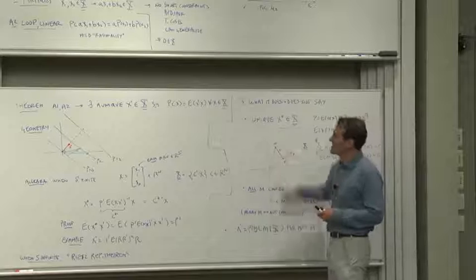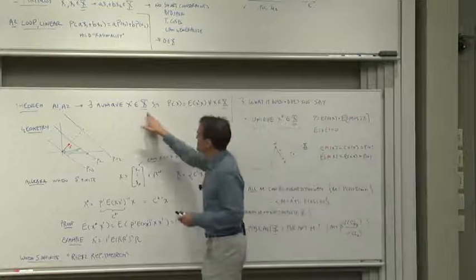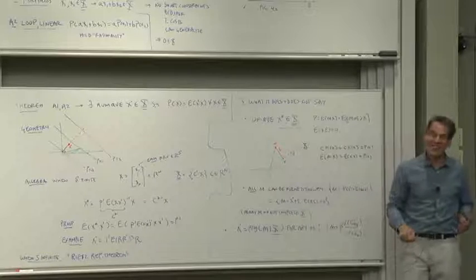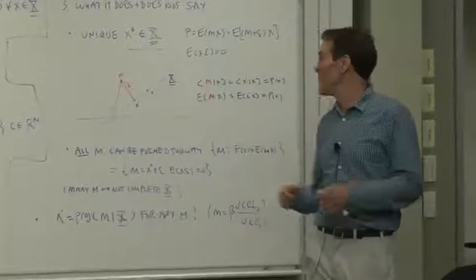Be careful. First of all, it says there is a unique X star in X. That doesn't mean that there aren't other discount factors that won't be in the payoff space.